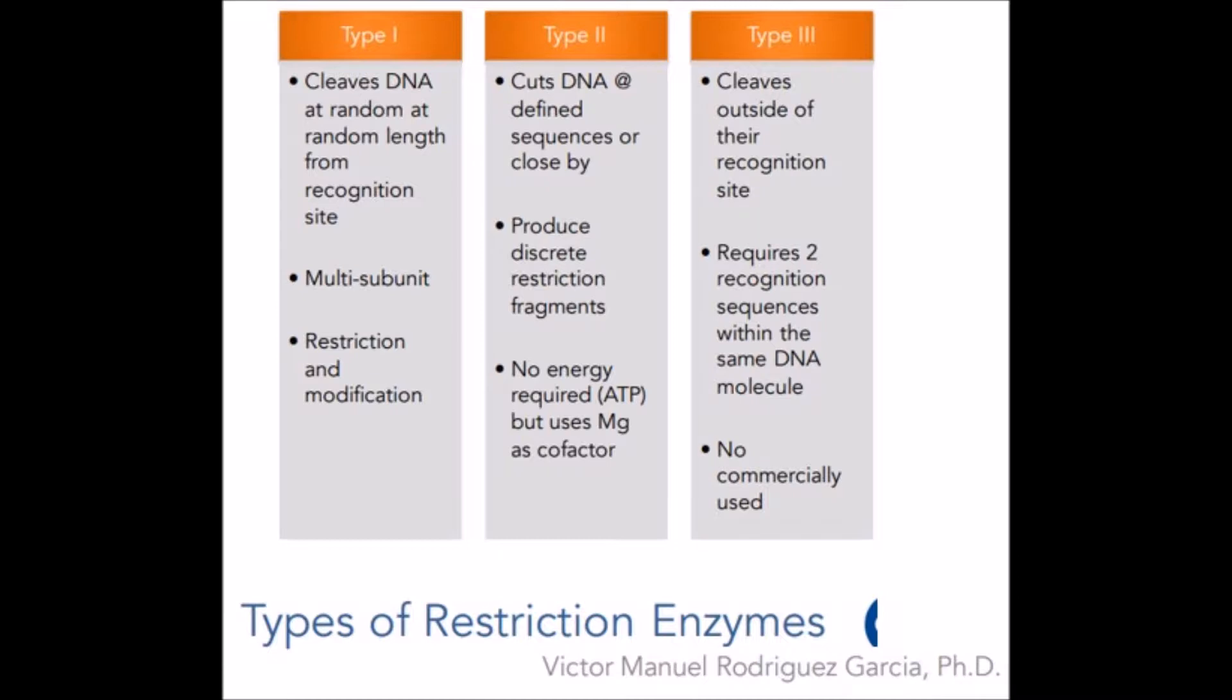A sequence on one strand of the DNA and its complementary sequence on the other strand can form a palindrome, which can be identified by a restriction enzyme. This is called a restriction site.